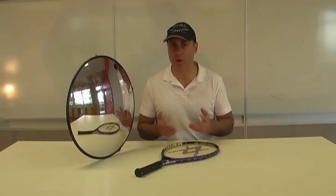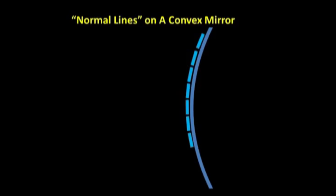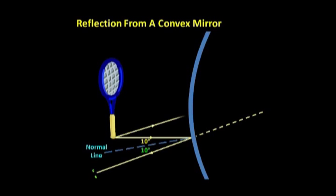We also draw simple ray diagrams which clearly show why convex mirrors produce diminished images, that is images which are smaller than life size.